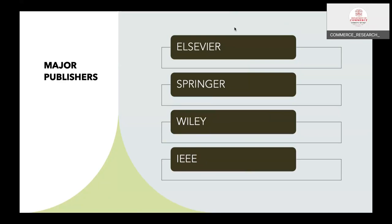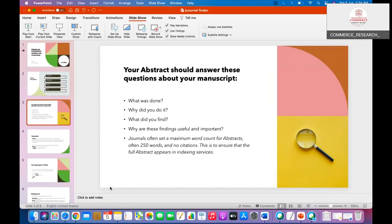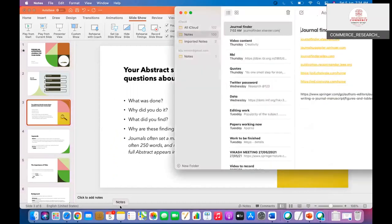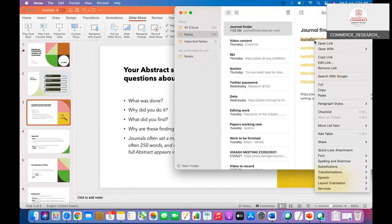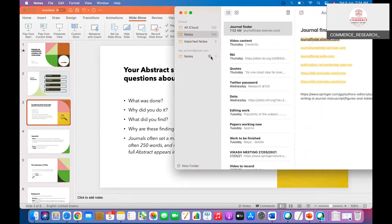The task is to explain how to find an appropriate journal. These publishers have so many journals, and I will show you how to find journals published by each of these publishers. I will show you each publisher's journal finder. First of all, Elsevier — every publisher has its own journal finder system.